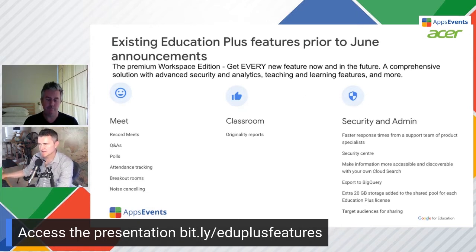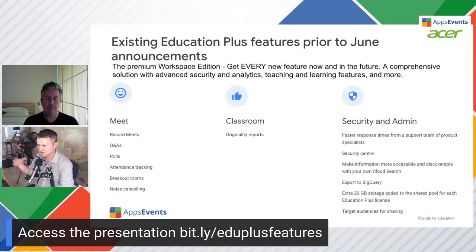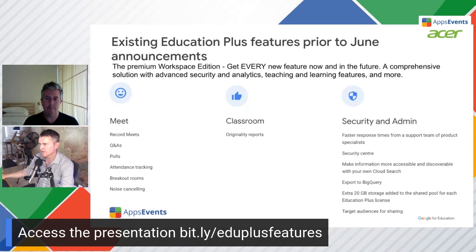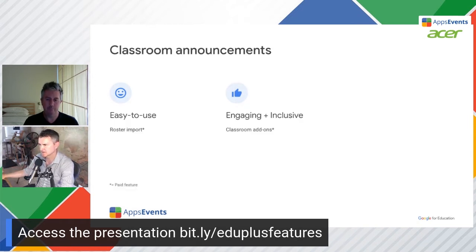Just to backtrack — Education Plus is a one-year commitment. You can take it for a year and then choose to let it go, going back to normal Education Workspace Fundamentals. But if you want to sign up for two or three years, you get a discount: 5% for two years, and 10% for three years.